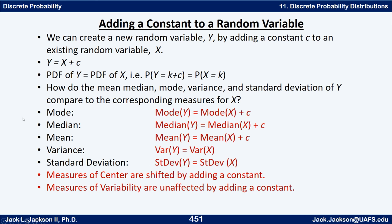It turns out that the mode of y is the mode of x plus c, the median of y is the median of x plus c, and the mean of y is the mean of x plus c. So all those measures of central tendency are just shifted by adding the constant c. But it has no effect on the variance or the standard deviation — the variance of y and the variance of x are the same thing.